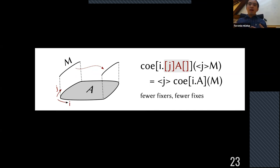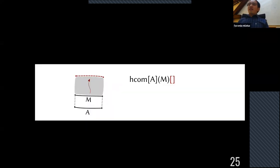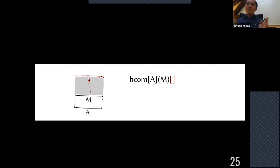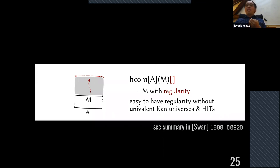The second topic is empty systems. Imagine you have a line M over type A and you want to do composition, but you don't specify any face at all — just going from one end to the other with no constraints. That's an empty system. You might wonder why you can't just reduce this to M, since there's no constraint. This turns out to be very difficult without regularity, and we don't really know how to achieve regularity with a univalent universe and higher inductive types and all other desired features.